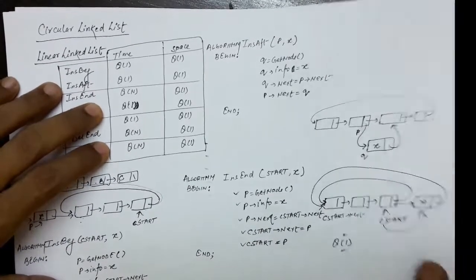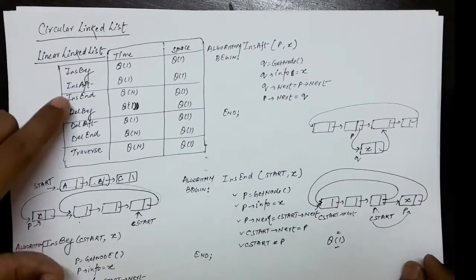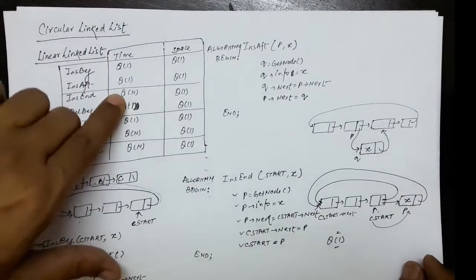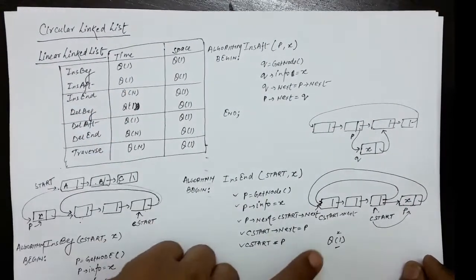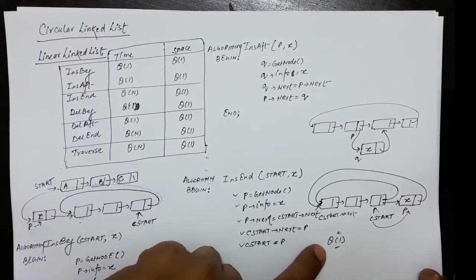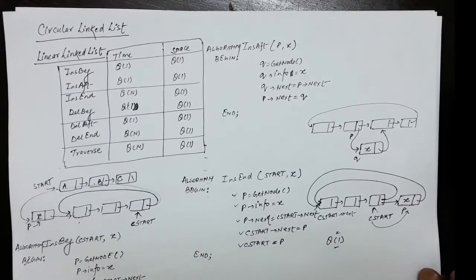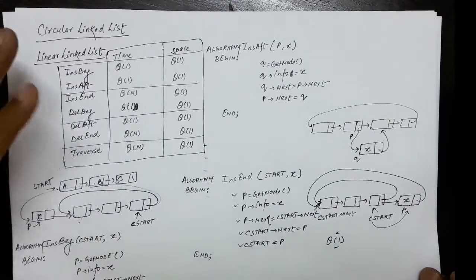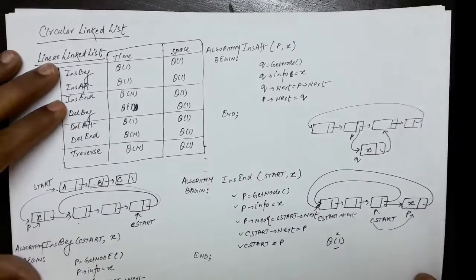If you compare this with the linear linked list table, the insert end operation was requiring theta(n), but here we require only theta(1). So the circular linked list has given a significant improvement in time for the insert end operation.